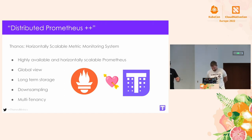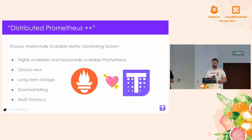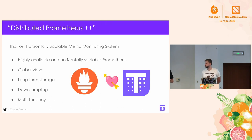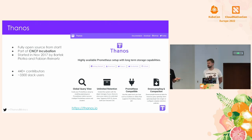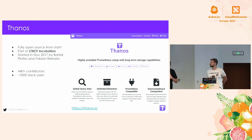That brings us to Thanos, which we may call distributed Prometheus plus plus. Prometheus has certain problems: it's just a single binary and you can only vertically scale it. When you need a highly available system you need additional facilities — that's where Thanos comes in, providing highly available, horizontally scalable data storage for Prometheus. Thanos is nearly five years old, has been an incubating project for nearly three years, recently crossed 400 contributors, and has a very vibrant community.